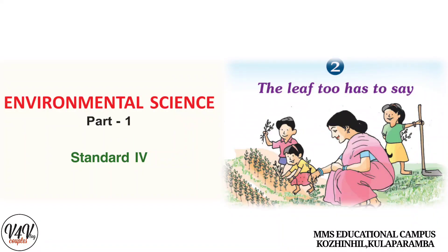Hello my dear students, hope you're fine. So we can start the next chapter. This is Environmental Science, Chapter 2, from the Part 1 textbook. In this chapter we will learn about the leaf, the different types of leaf, venation, and the germination of a seed.